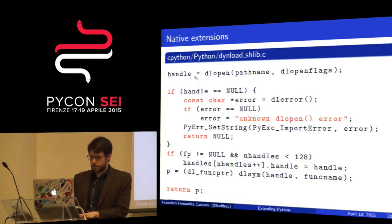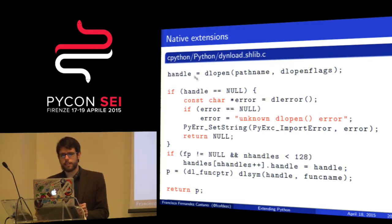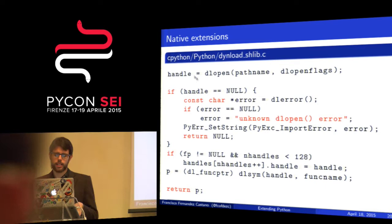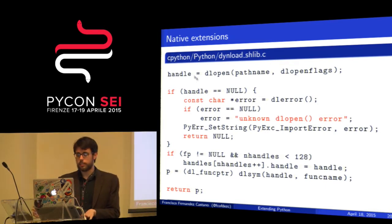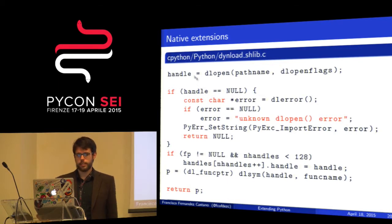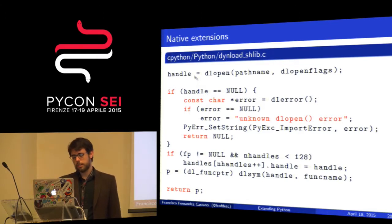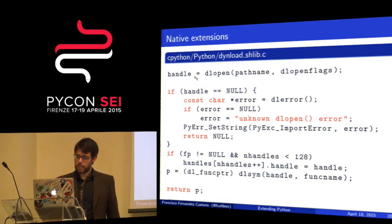As you know, in Python we have exceptions, but in C this concept doesn't exist. The mechanism used in CPython is: we have to return NULL when an error happens, and if we want to raise an exception, we have to register it on the runtime. If something wrong happens, we register this exception — a basic exception with some message — and we return NULL.